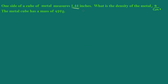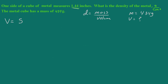The first thing I'm going to do is write out my definition of density: density is mass over volume. I want to make sure I get the units correct. We have the mass, which is 434 grams. We don't have the volume, although we're given a hint — one side of this cube measures 1.44 inches. We know that the volume of a cube is just the length of the side cubed. Since we're in inches and we want cubic centimeters, I'm going to convert 1.44 inches into centimeters before I cube it. We know that 1 inch equals 2.54 centimeters.